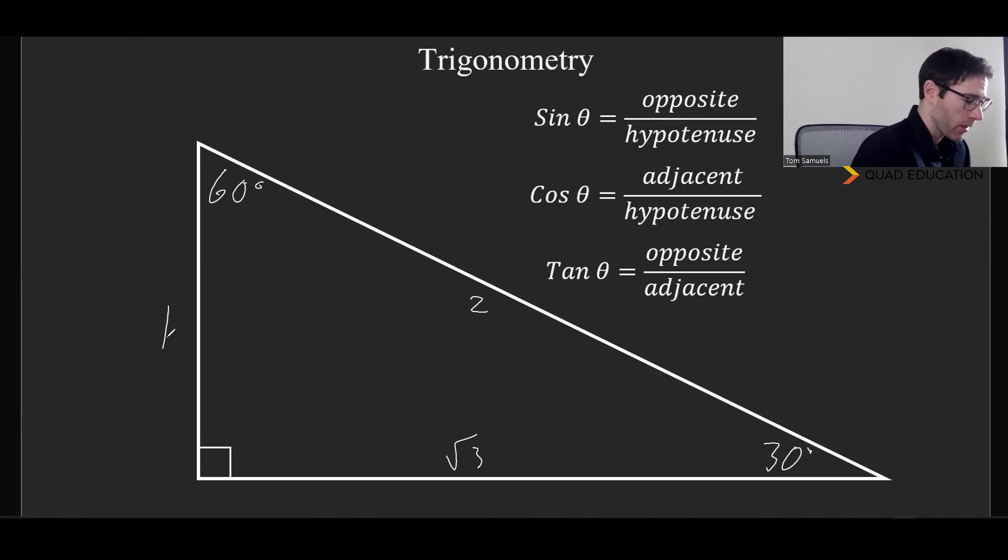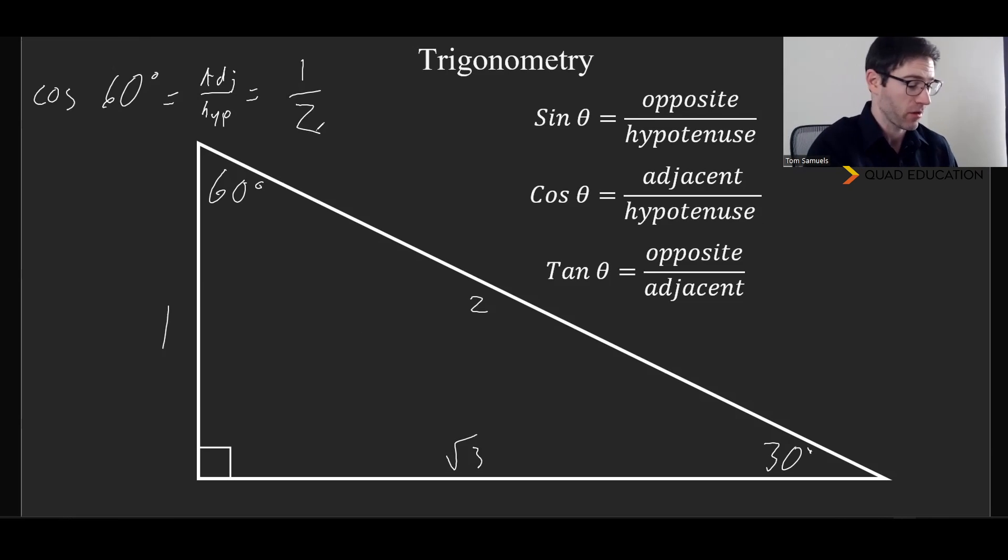And so then we look at that, let's say we did the cosine of 60 degrees. Well, our 60 degree angle is right here, and that's going to be the adjacent divided by the hypotenuse. And that's going to be 1 over 2. So if you're wondering why the cosine of 60 degrees was 1 half, there it is.